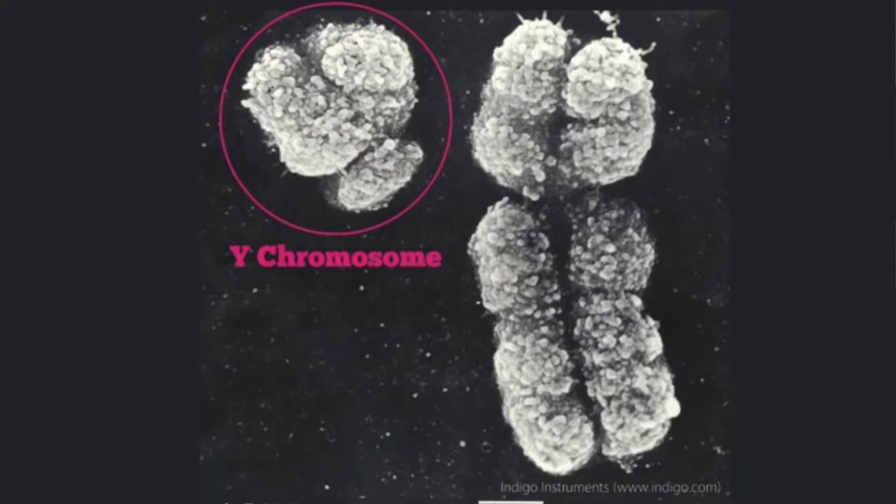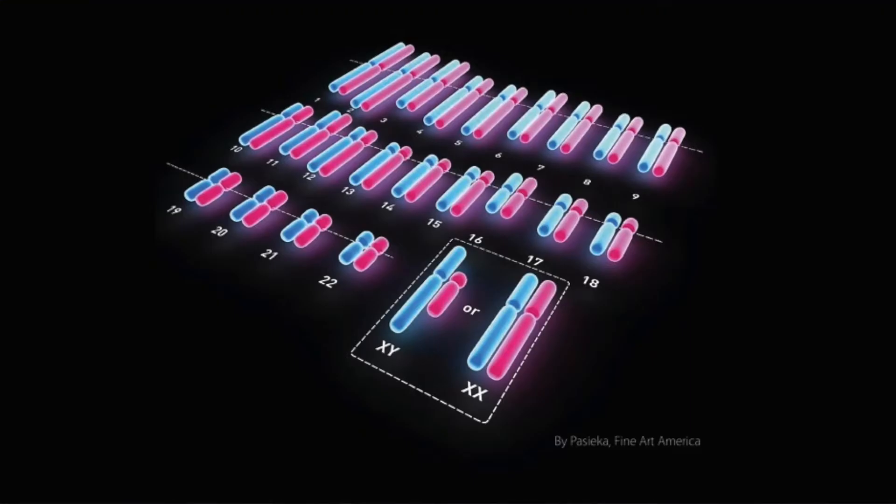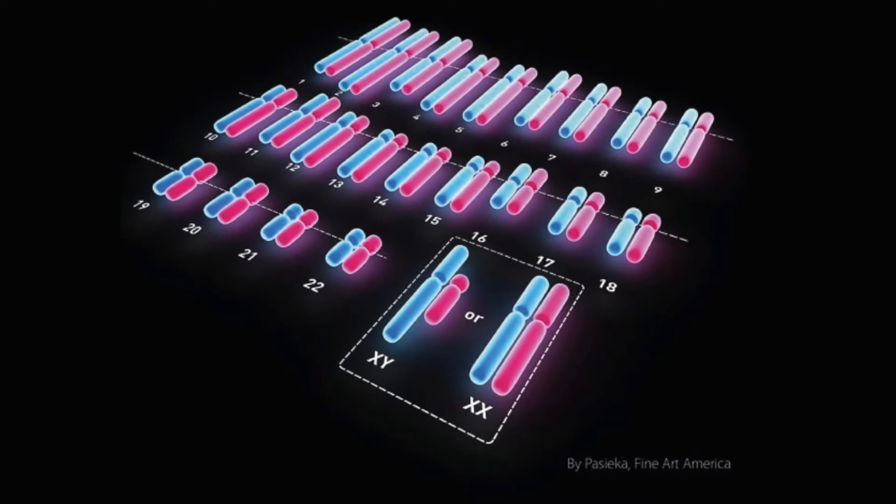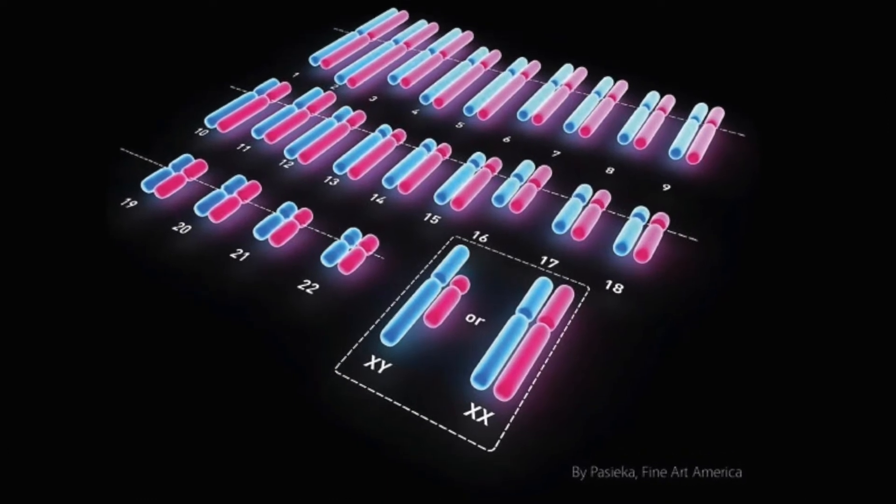So what is the Y chromosome? Human cells have 23 chromosome pairs. One of these pairs are the sex-defining chromosomes. Women have two X chromosomes in this pair — one inherited from the mother and one from the father. But men have an X and a Y chromosome. The X is always inherited from the mother and the Y is always inherited from the father.